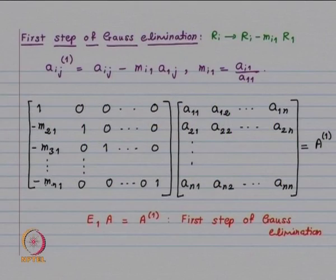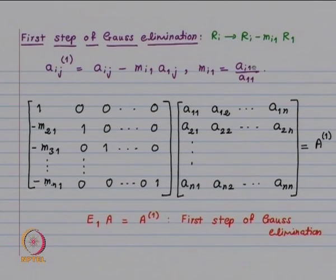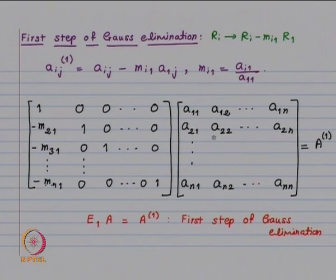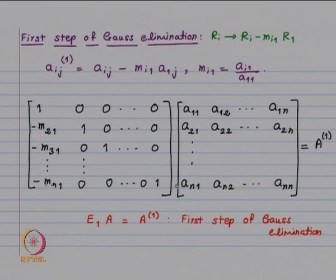Now for the general n×n matrix, the idea is similar. In the first step we multiply the first row by Mi1 = Ai1/A11 and subtract from row i, for i = 2, ..., n. This introduces zeros below the diagonal in the first column. This first step of Gauss elimination can be performed by pre-multiplying A by E1 = I − M1·E1^T, and E1·A = A^(1).